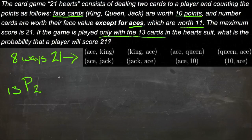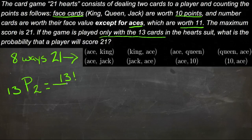So 13 pick 2, we use our probability formula and it looks like this. We have 13 factorial, because that's the number of possibilities on top.